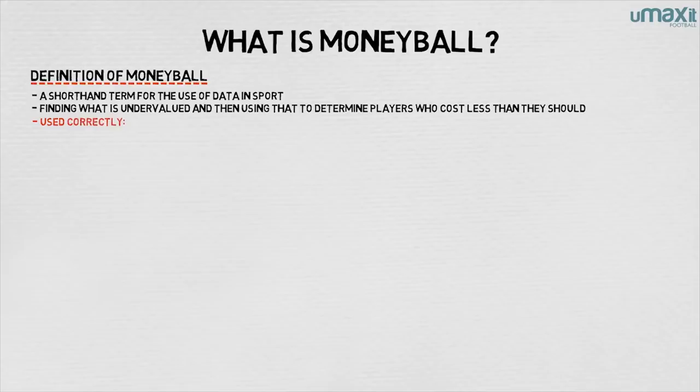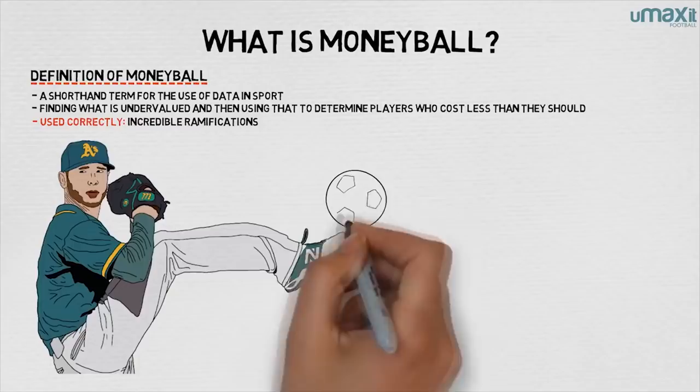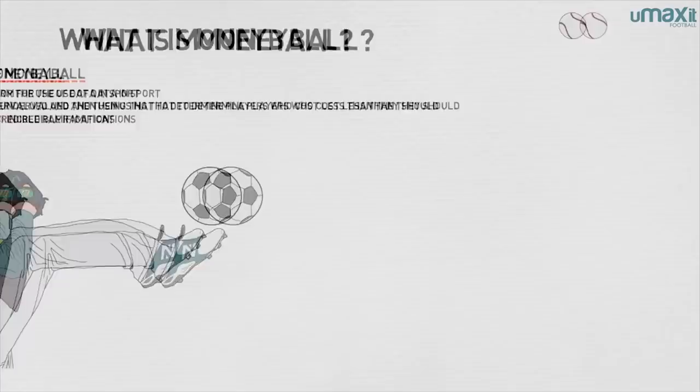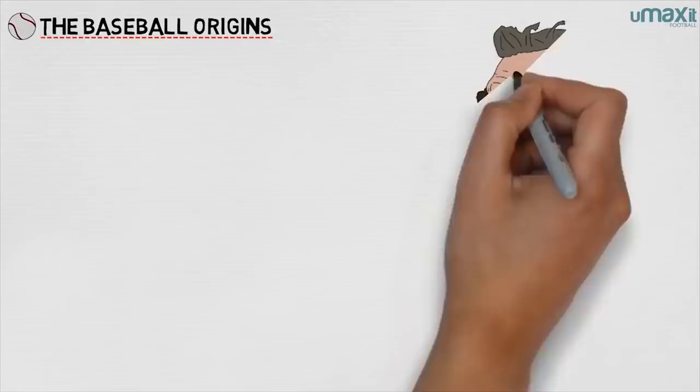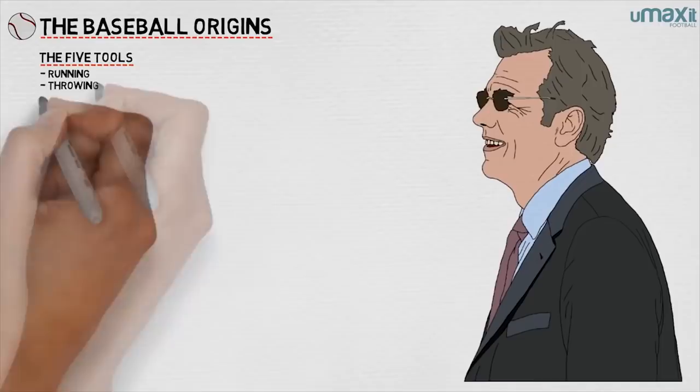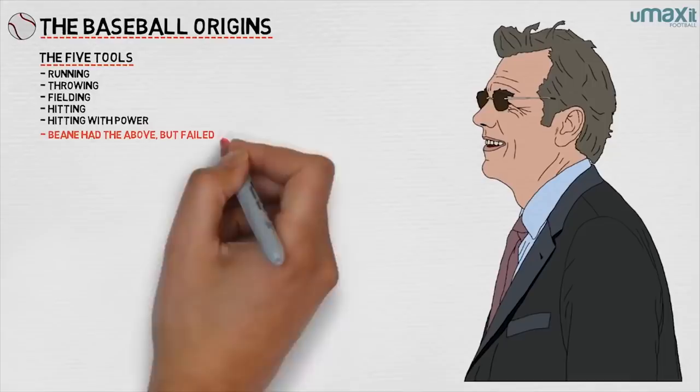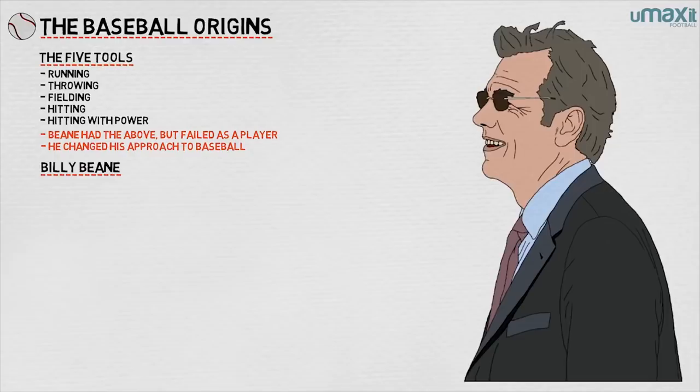The term comes from Michael Lewis's book about Billy Beane. Beane had everything as a player — what scouts call the five tools: running, throwing, fielding, hitting, and hitting with power. When he failed as a player, he vowed never to think about baseball in the same way. Lewis's book charts how Beane, by then general manager at the poor, unfashionable Oakland A's, used data to determine player recruitment and achieved remarkable success on a modest budget.